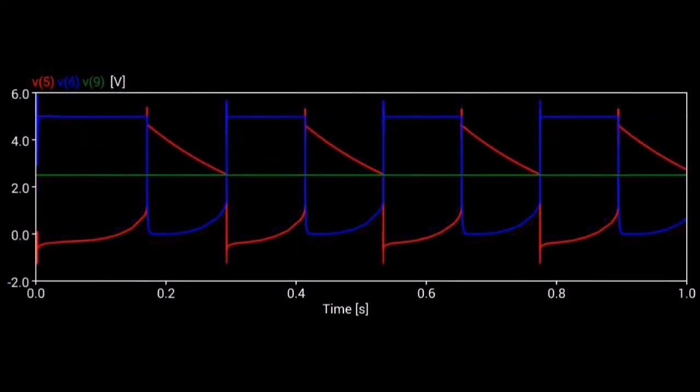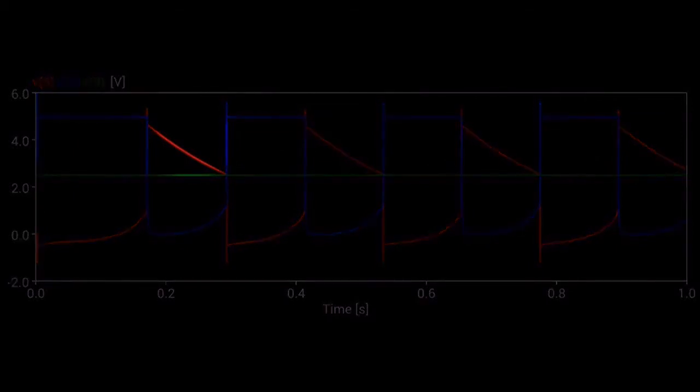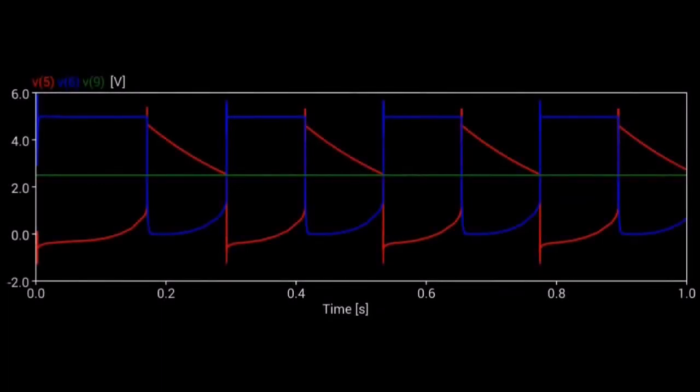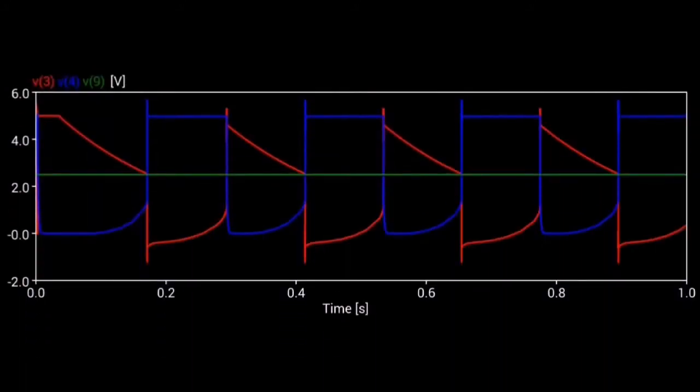The second inverter is the same situation. We have the input in red and the output in blue squared up nicely. But note that it's 180 degrees out of phase with the first inverter. So when the output of the second inverter is high the output of the first inverter is low and vice versa. Basically we've made a square wave oscillator.